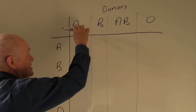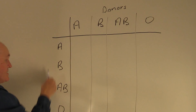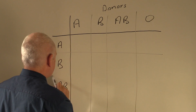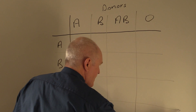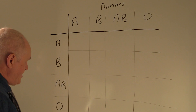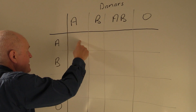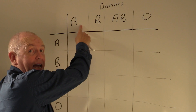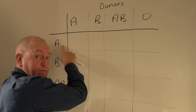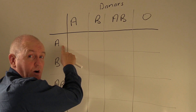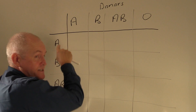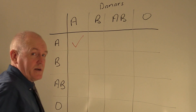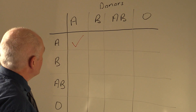We want these donors to give blood to these recipients. Let's imagine the situation where A is giving to A. This person is going to be giving A antigens, but in the plasma of the A recipient there are not going to be any A antibodies to agglutinate the donated red cells. Therefore that is going to be acceptable, just thinking about the ABO system.